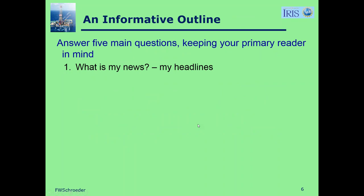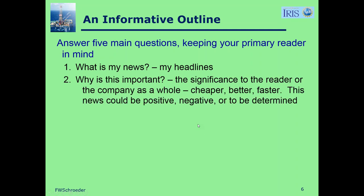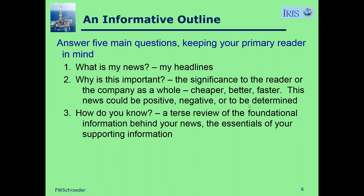I suggest an informative outline and ask yourself five main questions. What's my news? If you were a journalist, what would the title banner on the news article be? Why is this important? What's the significance to the reader or to the company as a whole? Maybe it's something we can do cheaper, better, or faster. The news could be positive — I think we should drill Barracuda — it could be negative: our analysis says we do not think Barracuda would be an economic well — or it could be something we haven't yet determined and we need to do more technical work before we can come up with a final conclusion.